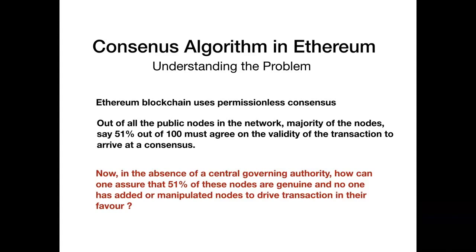Now in the absence of a central governing authority, how can one ensure that 51% of these nodes are genuine and no one has added or manipulated nodes to drive transaction in their favor?